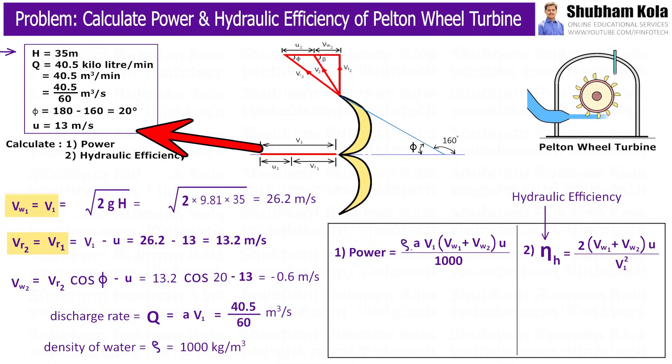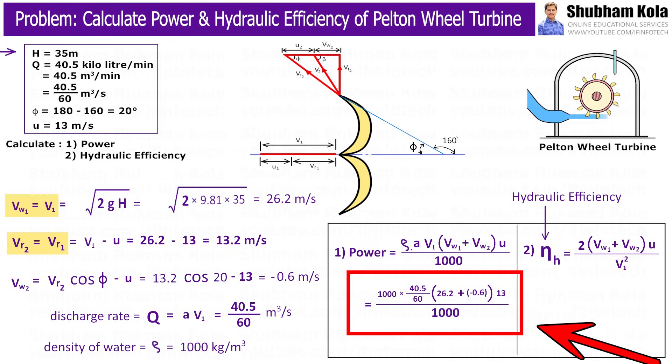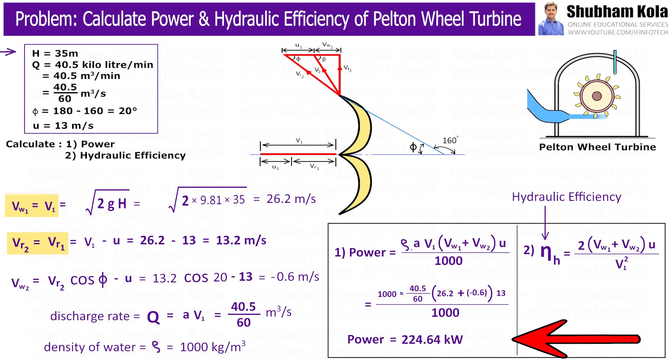The mean bucket speed u is 13 m/s which has been provided in given data. So, here I'll put all these values and by calculating this, we'll get power developed is equal to 224.64 kW.